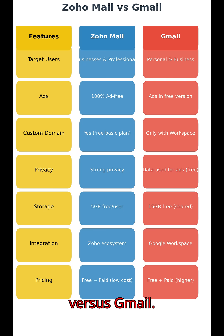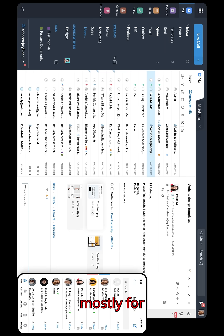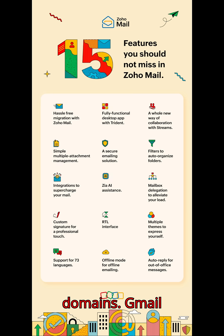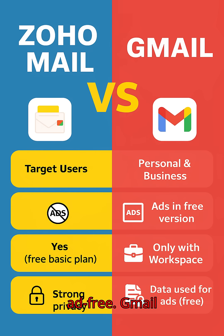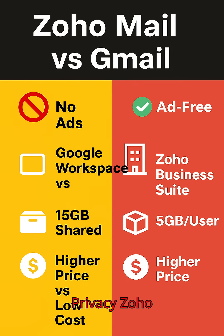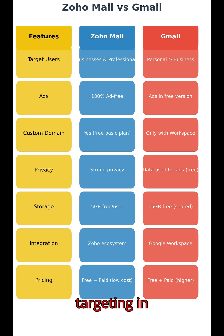Zoho Mail versus Gmail — key differences. Target users: Zoho Mail is mostly for businesses and professionals, with a focus on privacy and custom domains. Gmail is for both personal and business use. Ads: Zoho Mail is completely ad-free, while Gmail's free version shows ads — the Workspace paid version is ad-free. Privacy: Zoho Mail offers strong privacy and data is not used for ads. Gmail's free version uses data for ad targeting, while Workspace has stricter privacy.